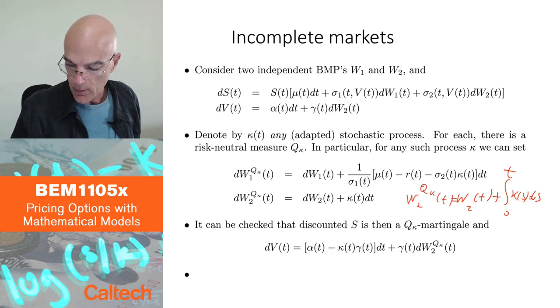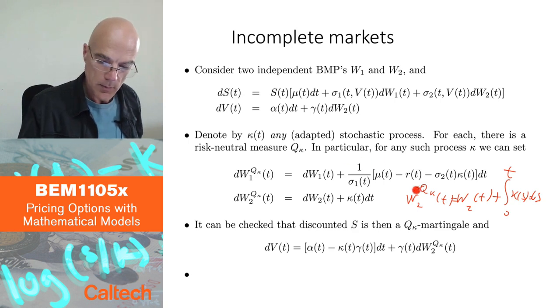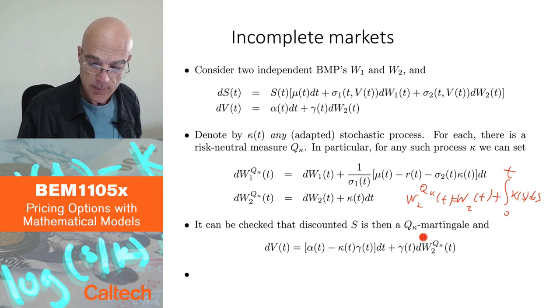And then similarly for the W1, this part is the same as in Black-Scholes, mu minus r over sigma, except they may depend on time. In which case, I also mean something like this with the integral. I mean the integrated form. And then I also subtract sigma_2 kappa.